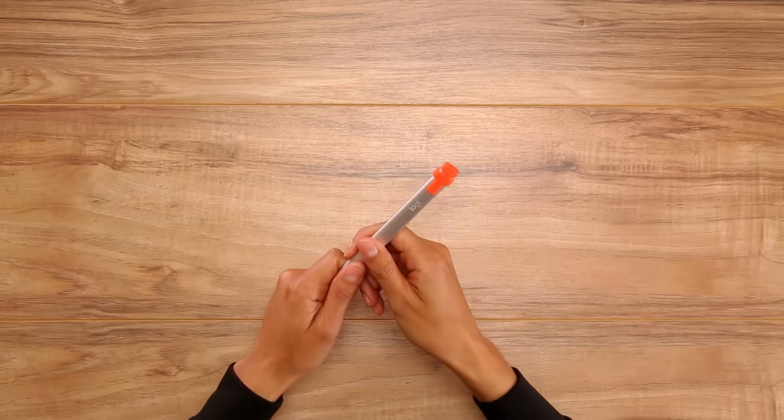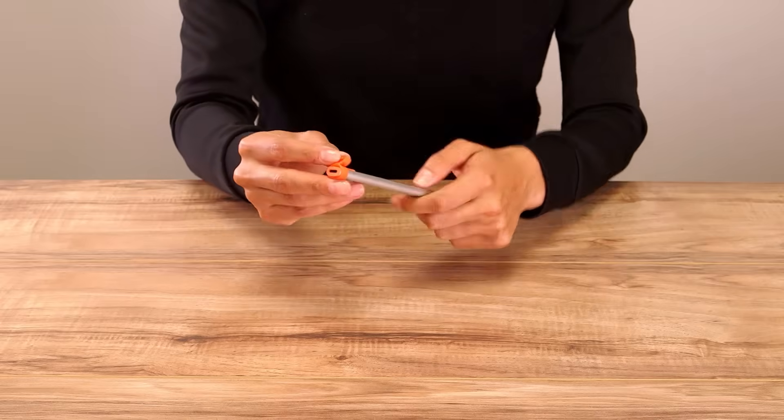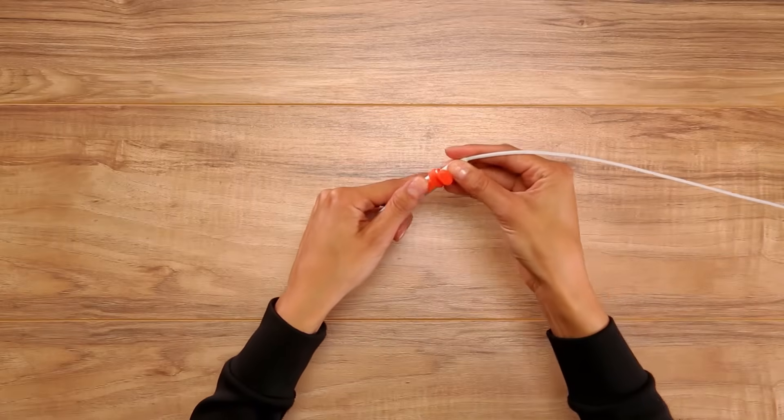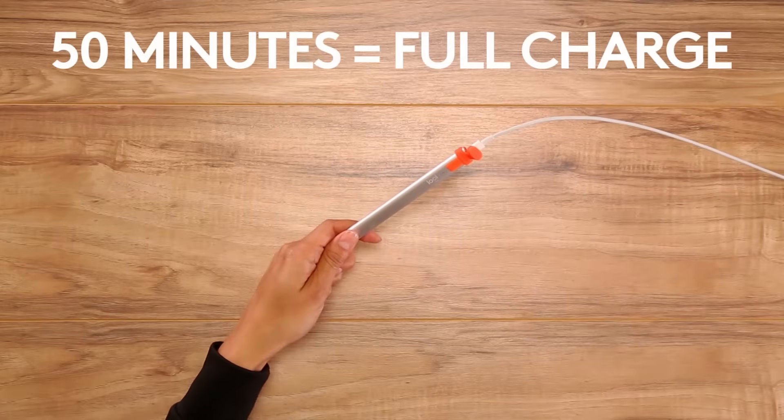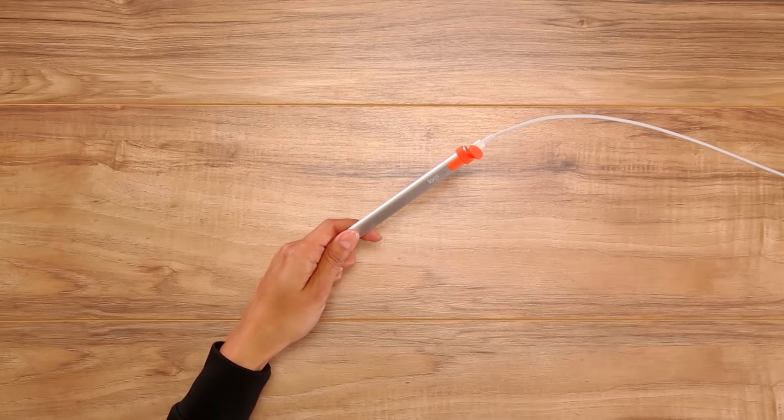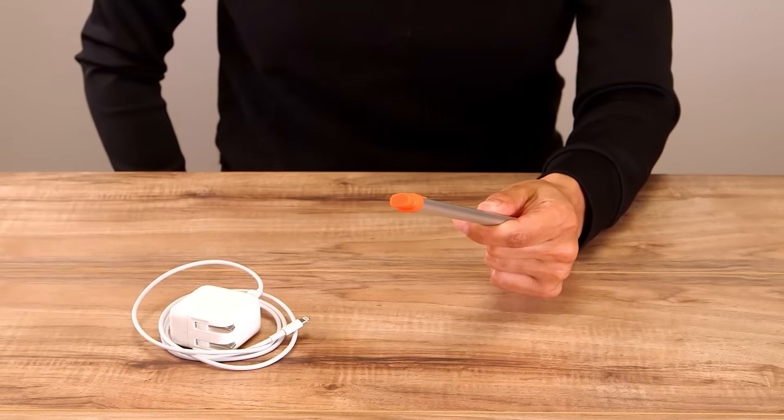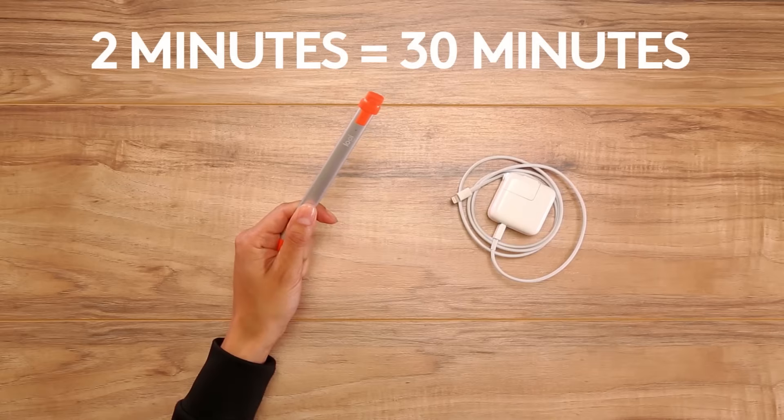Logitech Crayon charges via the standard lightning cable that comes with the iPad. To charge, simply open the cap and insert the cable all the way. It will take 50 minutes to fully charge. You cannot use Logitech Crayon while it's being charged. Keep a spare charger in the classroom for a fast boost when needed. Two minutes of charging will provide 30 minutes of active writing time.